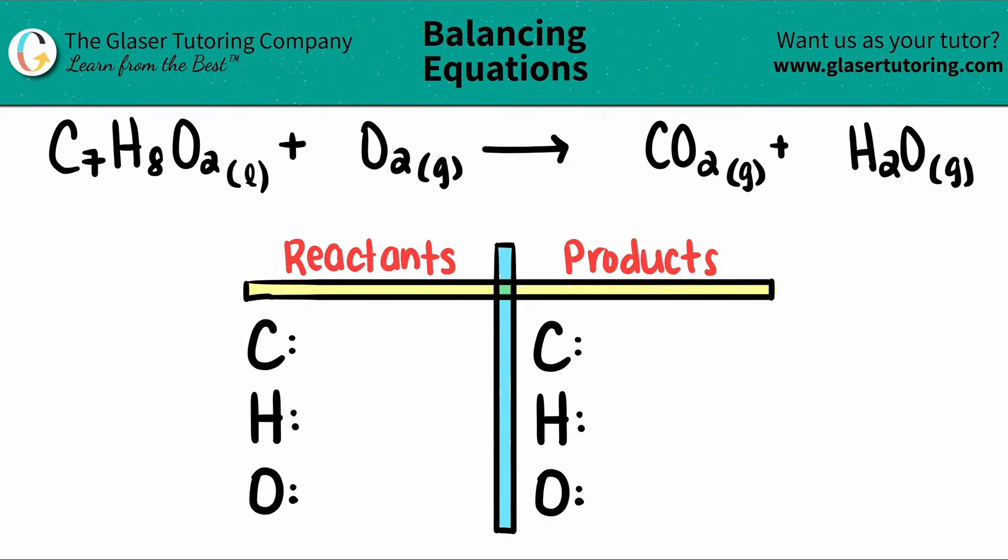Today, we're going to balance the equation of C7H8O2 plus oxygen gas, O2, and this will produce carbon dioxide, CO2, and water, H2O. This is a classic combustion reaction, but all we have to do is balance it.